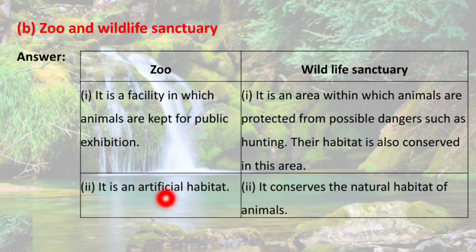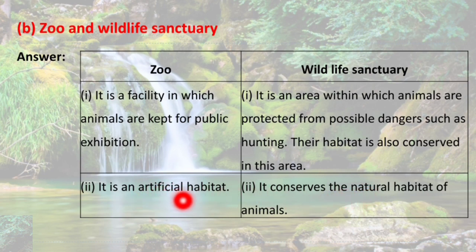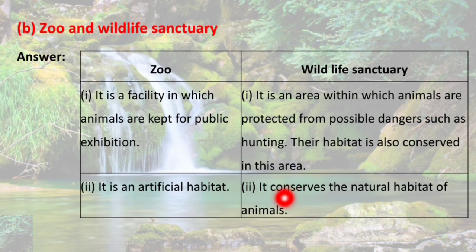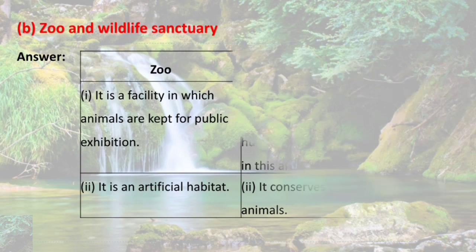Zoo is an artificial habitat, while wildlife sanctuary is the natural habitat of animals. If you have visited a zoo, you may have observed that the habitat is artificially generated there. But in the wildlife sanctuary, the natural habitat is preserved and animals can move freely, whereas in the zoo they have limited space to move.